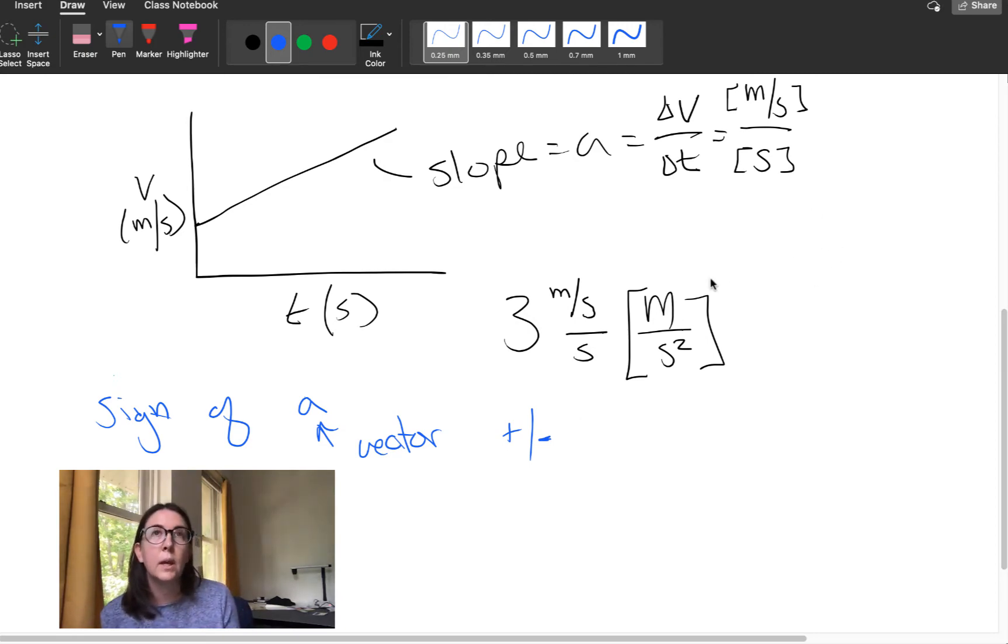Because if you think about dropping something from a tall cliff, here's my cliff, here's my person. If I drop something, this object is going to accelerate in this direction.